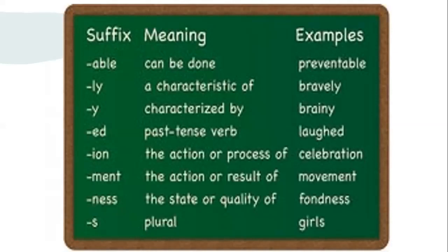Here are some common suffixes. -Able: can be done — preventable, something that can be prevented. -Ly: a characteristic of — bravely, having a characteristic of bravery. -Y: characterized by — brainy. -Ed: past tense verb. -Ion: the action or process of — celebration, the action or process of celebrating. -Ment: the action or result of — movement, the result of moving. -Ness: the state or quality of — fondness, a state of being fond of something, like a fondness for chocolate. -S is just plural.